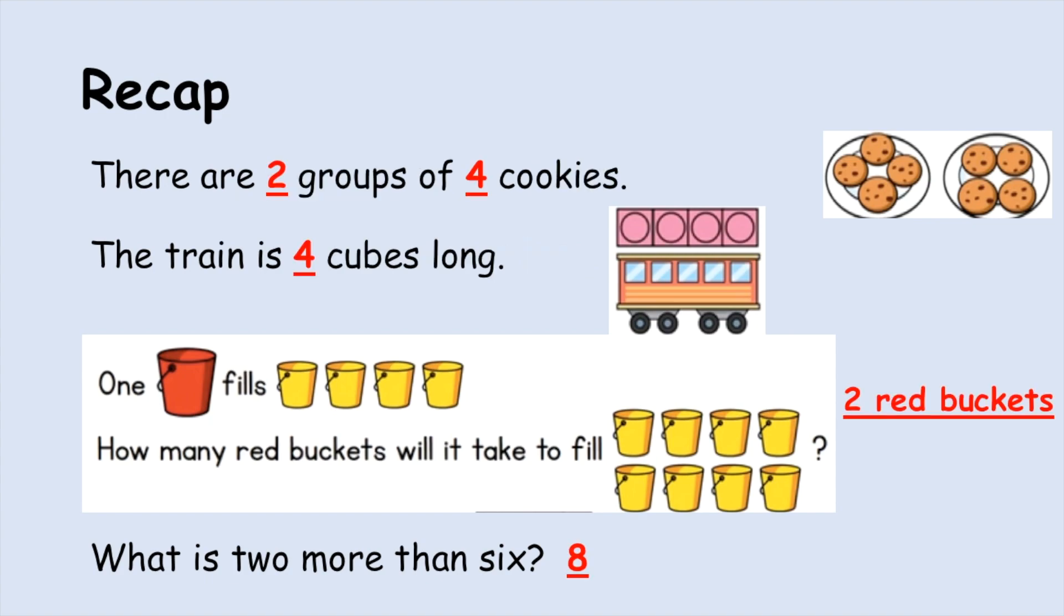The answers are: there are two groups of four cookies. So we have two groups and each plate has four. One, two, three, four. Remember just because they don't look exactly the same in the way that they are placed doesn't mean that they are not the same. The train is four cubes long. One, two, three, four.